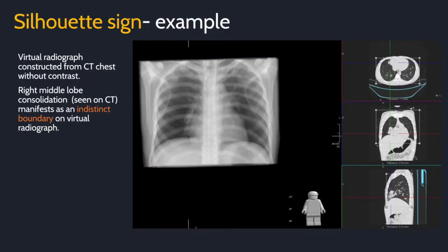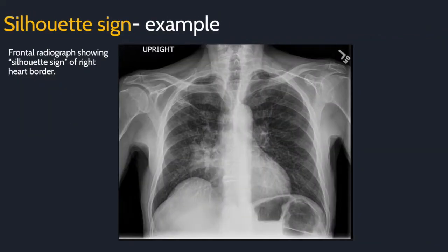To demonstrate the silhouette sign, here is a virtual radiograph reconstructed from a CT chest without contrast. On the right side of the screen, you see the three orthogonal planes of the CT with crosshairs over a right middle lobe pneumonia. Notice how this pneumonia manifests on the virtual radiograph by making indistinct the right heart border. Compare this image to the last image of a normal radiograph. Here is an example of a real radiograph showing the silhouette sign of the right heart border. Another way of saying that is a consolidation obscures the right heart border. The right heart is an anterior structure, so you can be relatively confident to say that the opacity is in the anterior right lung, in the right middle lobe, rather than the posterior lung.